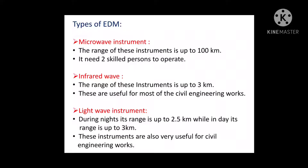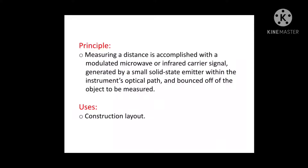These instruments are also very useful for civil engineering projects. The working principle of EDM: measurement of distance is accomplished with a modulated microwave or infrared carrier signal generated by a small solid-state emitter within the instrument's optical path, bounced off the object to be measured. The modulation pattern in the returning signal is read and interpreted by the onboard computer. The distance is determined by emitting and receiving multiple frequencies and determining the integer number of wavelengths to the target for each frequency.